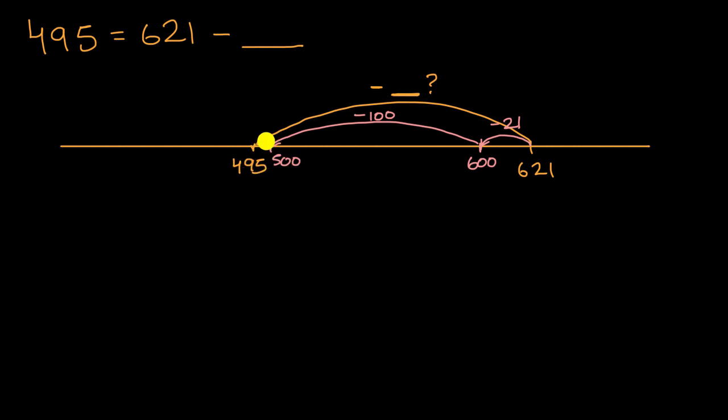And then to go from 500 to 495, we would subtract another 5. So to go from 621 to 495, and I picked these numbers intentionally. I picked 21 to subtract to get to 600. I picked 100 to get to 500. And then I picked 5 to get to 495.